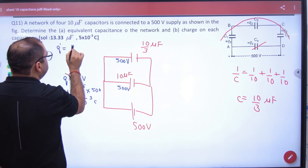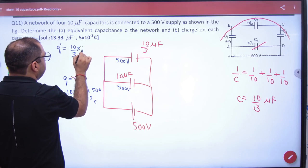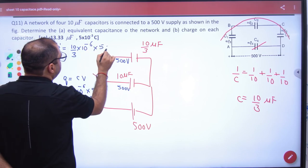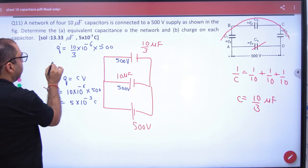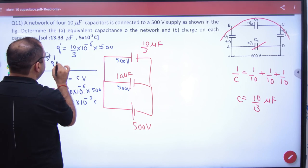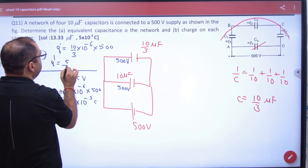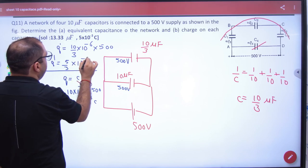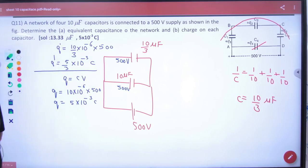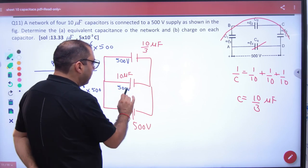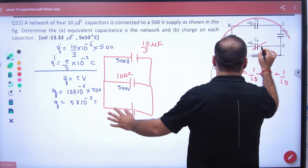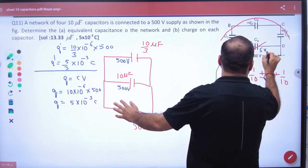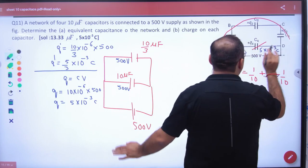Again, 10 by 3 into 10 raise to power minus 6 into 500, so Q dash is equal to 5 by 3 into 10 raise to power minus 3. Now their answer. This capacitor is 5 into 10 raised to power minus 3 coulomb done.